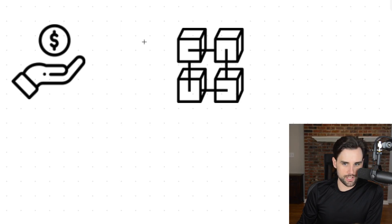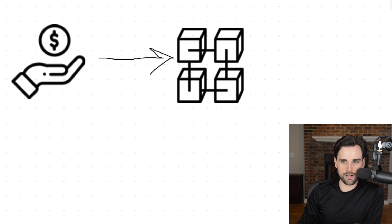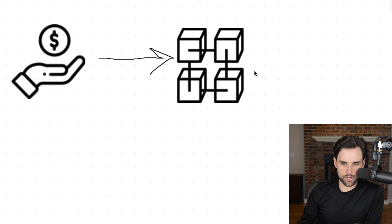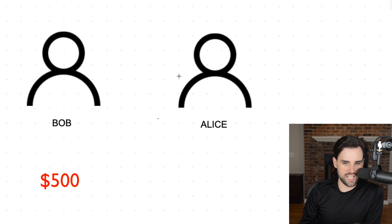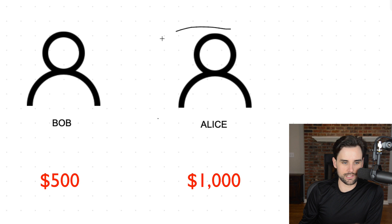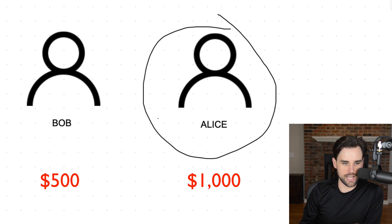In order to participate in creating new transactions, validators deposit a certain amount of coins to the network as stake. This is somewhat like a security deposit. They're incentivized to stake their coins to the network because they can get a monetary reward for validating new transactions. Although the greater amount of money they stake, the more likely the network is to choose them to validate the next block. For example, if Bob stakes $500 to the network and Alice stakes $1,000 to the network, it's twice as likely to choose Alice to validate the next transaction.